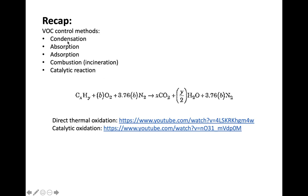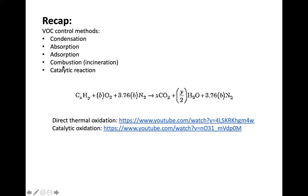Last class we went through all the methods that can be used for VOC control. They include the condensation method, which is a passive method. We can do absorption, which is drawing the VOC into the bulk of a liquid. Adsorption, which is attaching VOC molecules onto the surface of a solid. We can also do combustion, because after all, VOC is just made of hydrocarbons, some oxygen, nitrogen, or sulfur. So theoretically we could just let them get oxidized and go through the incineration process.